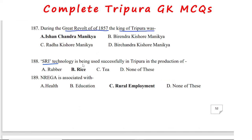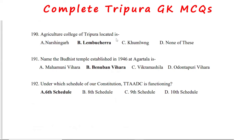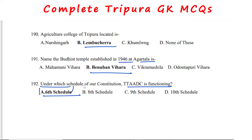SRI technology is being used successfully in Tripura in the production of rice. NREGA is associated with rural employment. The Agriculture College of Tripura is located at Lembuchara. The Buddhist temple established in 1946 at Agartala is Benuban Bihar. TTADC is functioning under the Sixth Schedule of the Indian Constitution — a very important fact for the upcoming TTADC exam.